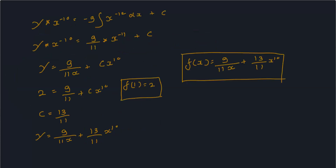Result मिलेगी: y · x^(−10) = −9 · ∫x^(−12) dx + C. Since ∫x^n dx = x^(n+1)/(n+1), we get: y · x^(−10) = 9/(11) · x^(−11) + C. Both sides को x^10 से multiply करने पर y की value मिल जाएगी।